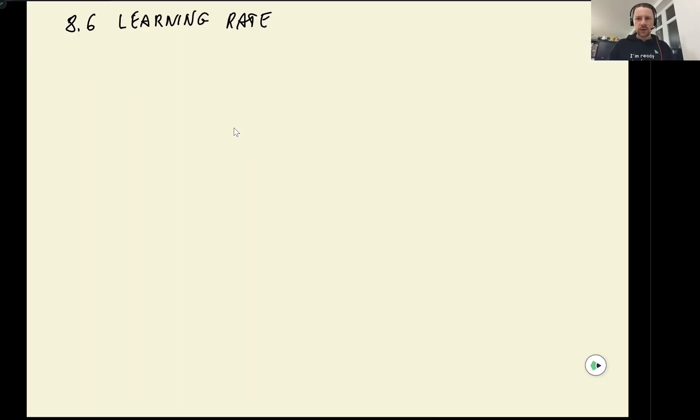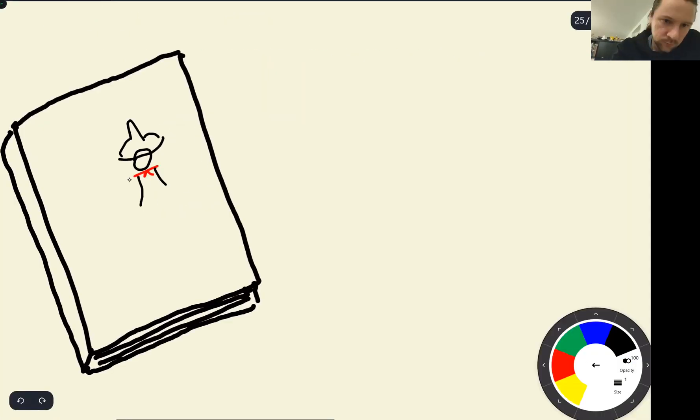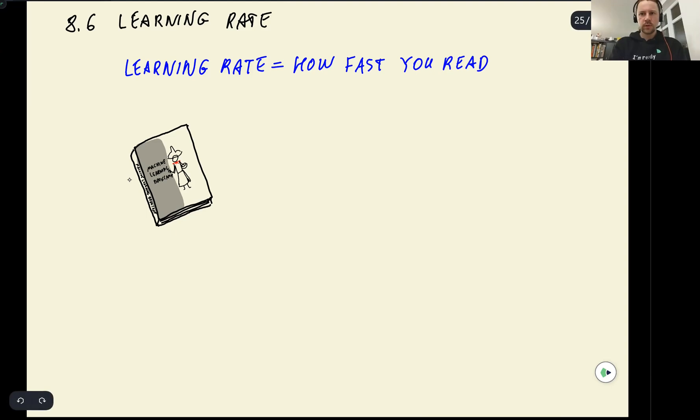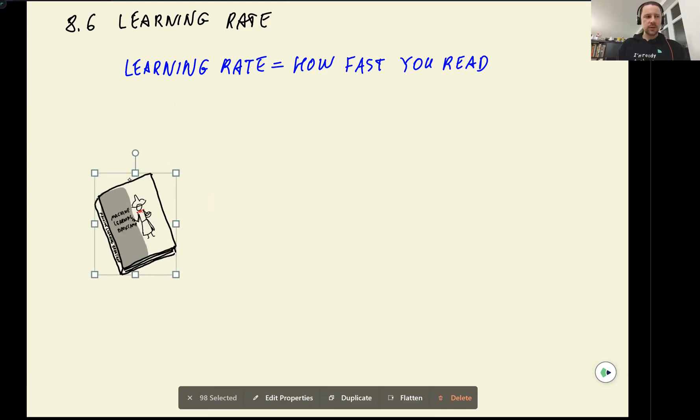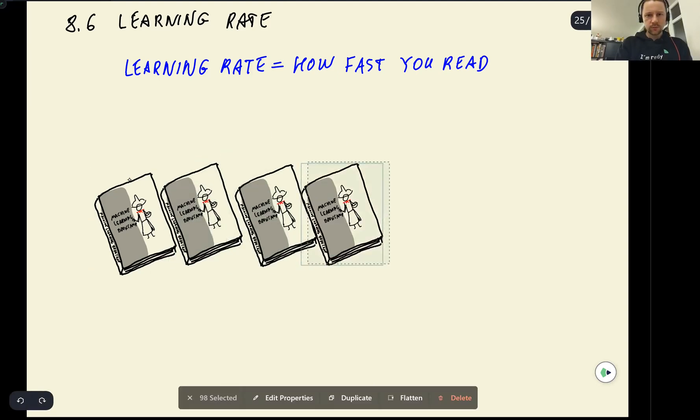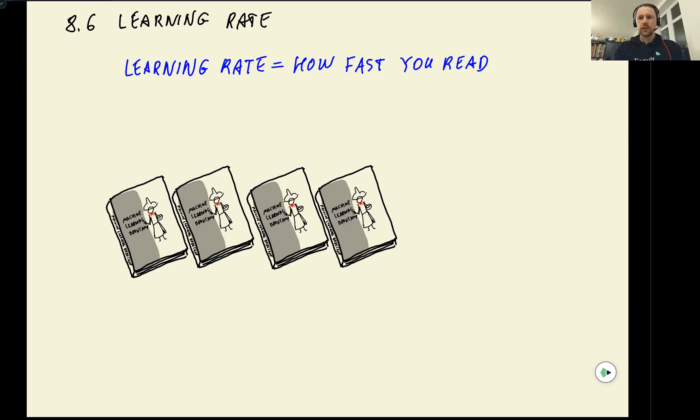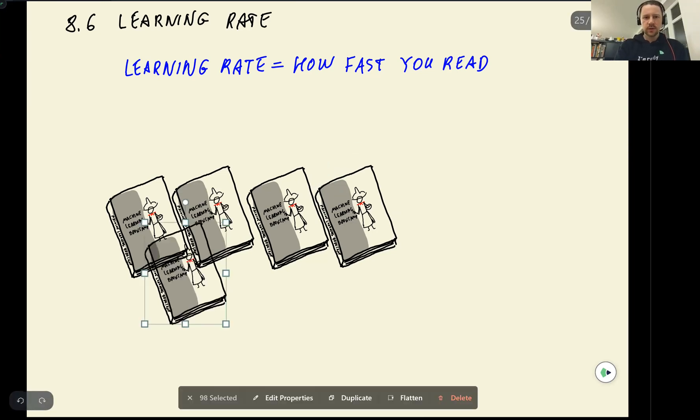A good way of thinking about learning rates is to use this analogy. So imagine that learning rate is how fast you can read. Let's say you have a book. So let's say you have a book and you want to read this book. So a learning rate tells how fast you read it. Let's say you read one book per quarter. Then one year you would read four books. Or alternatively, you can read a lot of books very fast. Let's say you read one book per day. Then one year you can read a lot of books.